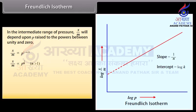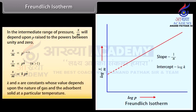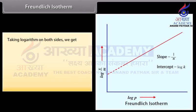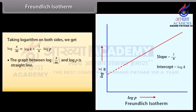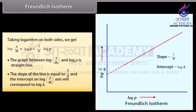This can be expressed as x/m ∝ p^(1/n), where the value of n is less than 1, or written as x/m = k × p^(1/n). K and n are constants whose values depend upon the nature of the gas and the adsorbent solid at a particular temperature. Taking logarithm on both sides: log(x/m) = log k + (1/n) log p. The graph between log(x/m) and log p is a straight line. The slope of the line equals 1/n, and the intercept on the log(x/m) axis corresponds to log k.